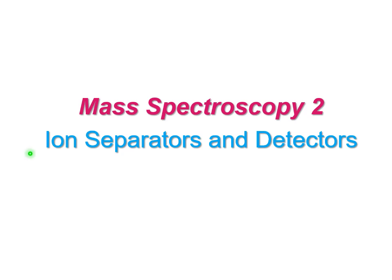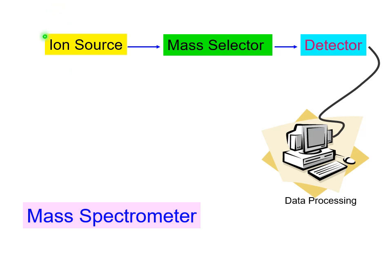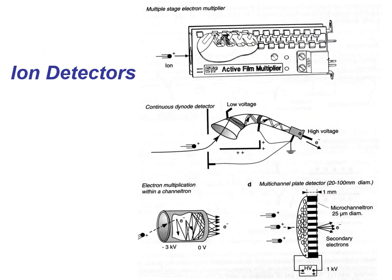Before we look at different sources of ions, now we'll look at ion separators and detectors. We need an ion source, then ions are selected or separated—it can be called a mass filter—and then they reach a detector and data processor. This is the general scheme of practically all mass spectrometers with few exceptions.